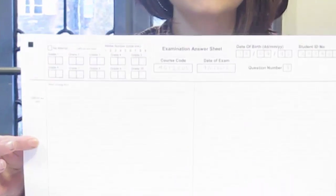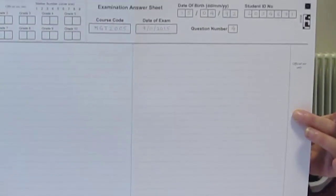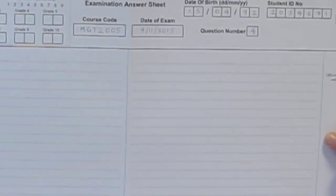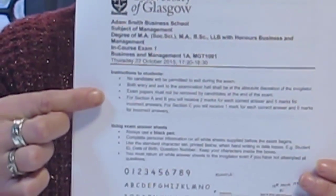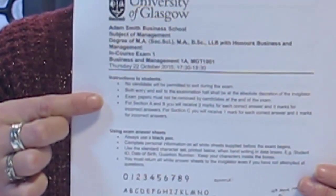Before the exam begins you will be given one white double-sided A3 answer sheet per question. The exam paper rubric will specify how many questions are to be answered. Invigilators will remind you to use a black ballpoint pen.